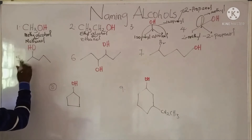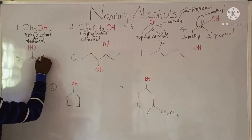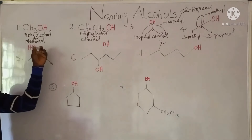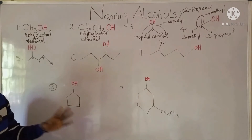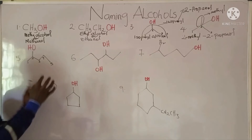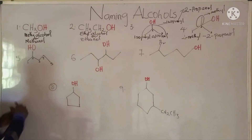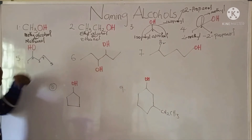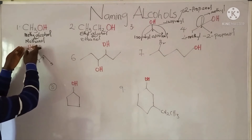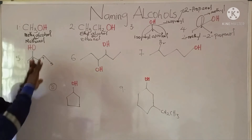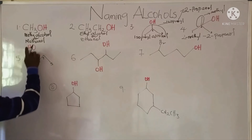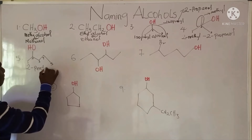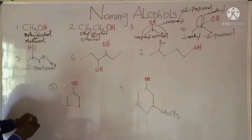Moving on to the next question. Let's number from here: 1, 2, 3, 4, and 5. When we number from the other end, the substituent gets a larger number. In IUPAC, the goal is to give the substituent the lesser number. So it is a 5-carbon chain, which is called pentane. Since there is an OH group — an alcohol — attached, the compound is called pentanol. To be specific, at carbon 2, it becomes 2-pentanol.